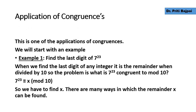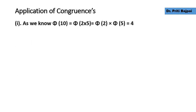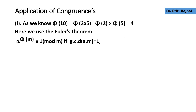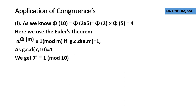There are many ways in which the remainder x can be found. Let's see the first method. As we know, phi of m is Euler's function, and phi of 10 equals 4. We can use Euler's theorem: a to the power phi(m) is congruent to 1 mod m, provided gcd(a, m) = 1. In our case, gcd(7, 10) = 1, so the condition holds.